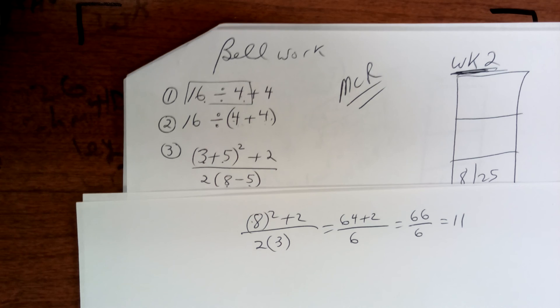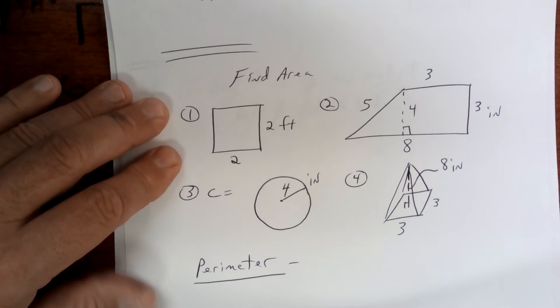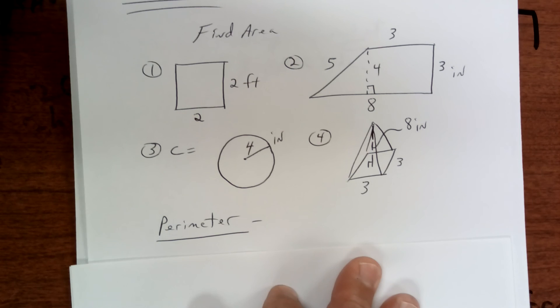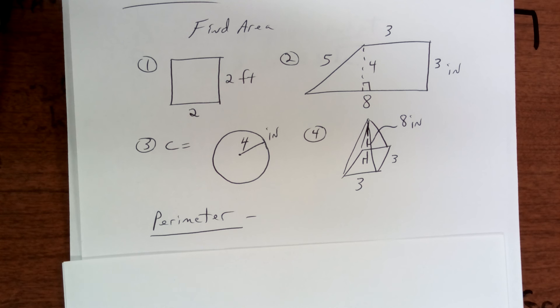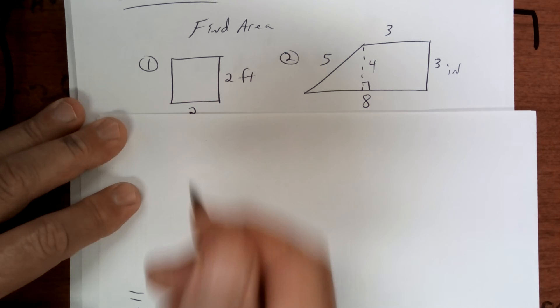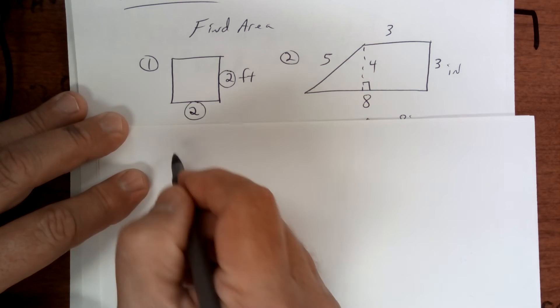All right, down at the bottom, on a new sheet of paper, copy this down. Copy all of this down. Okay, draw those diagrams. Let's take a look here. We're going to do area of a square. Area of a square is just length times width, so 2 times 2 is 4, so it's going to be 4 square feet.